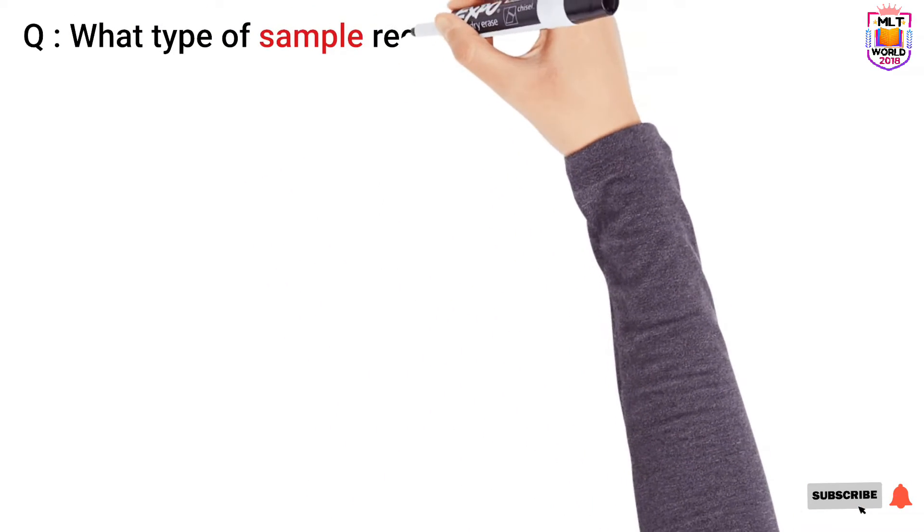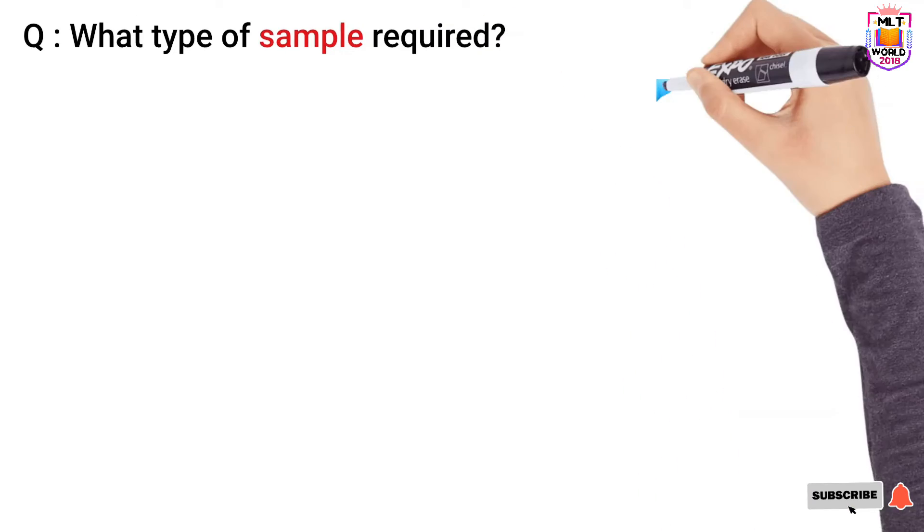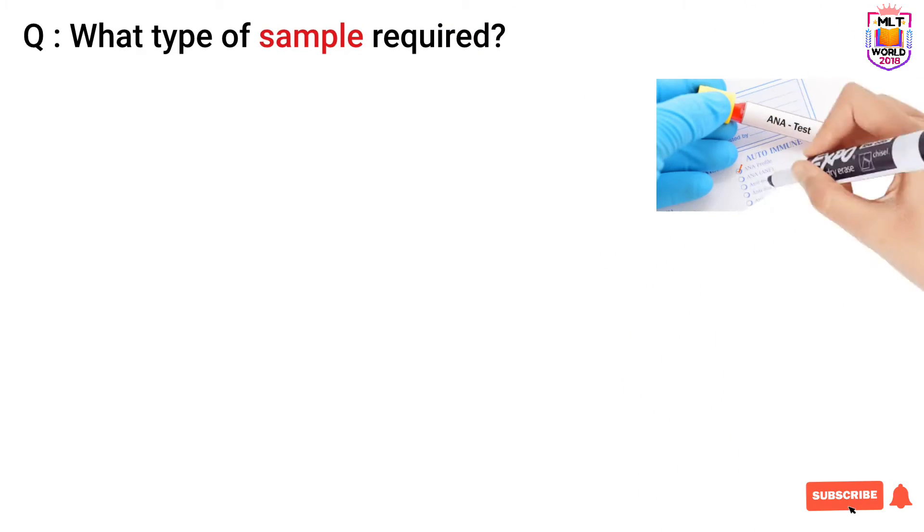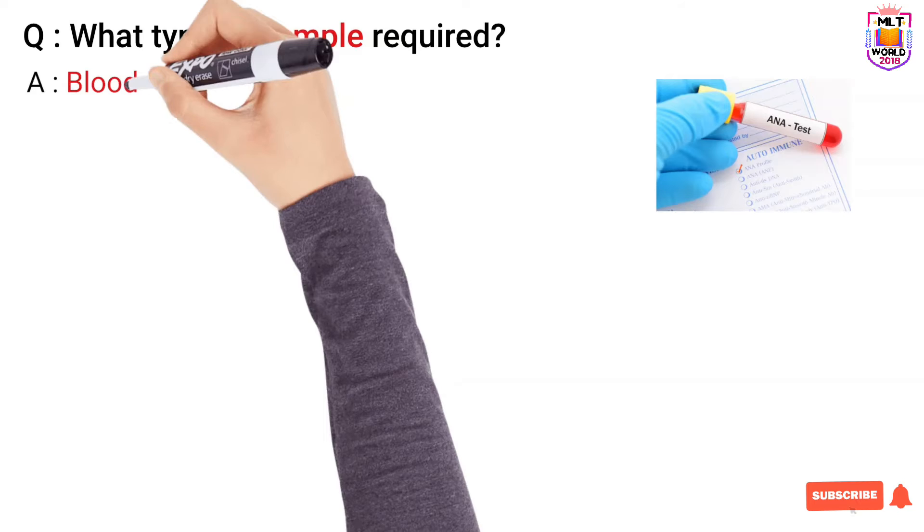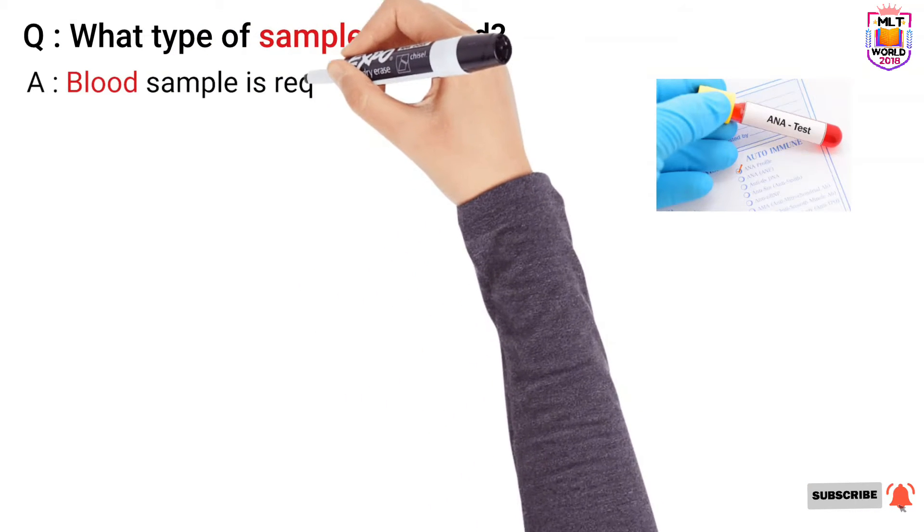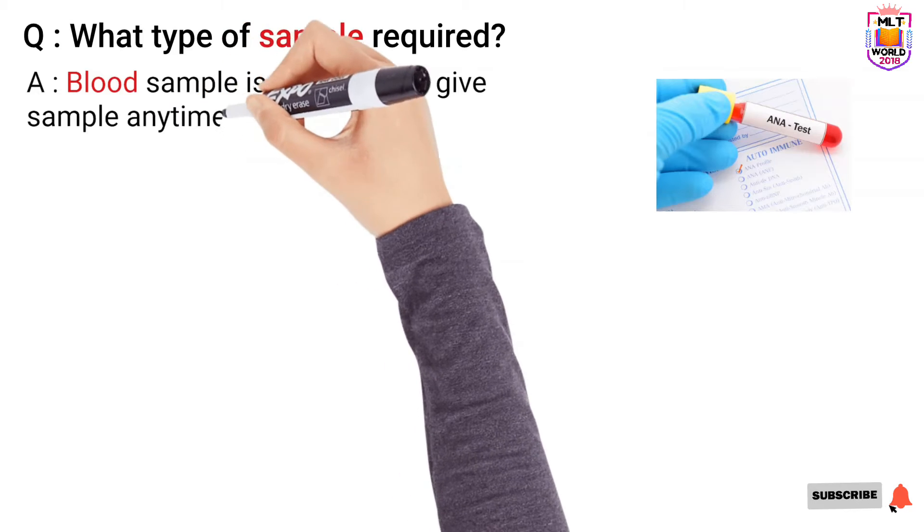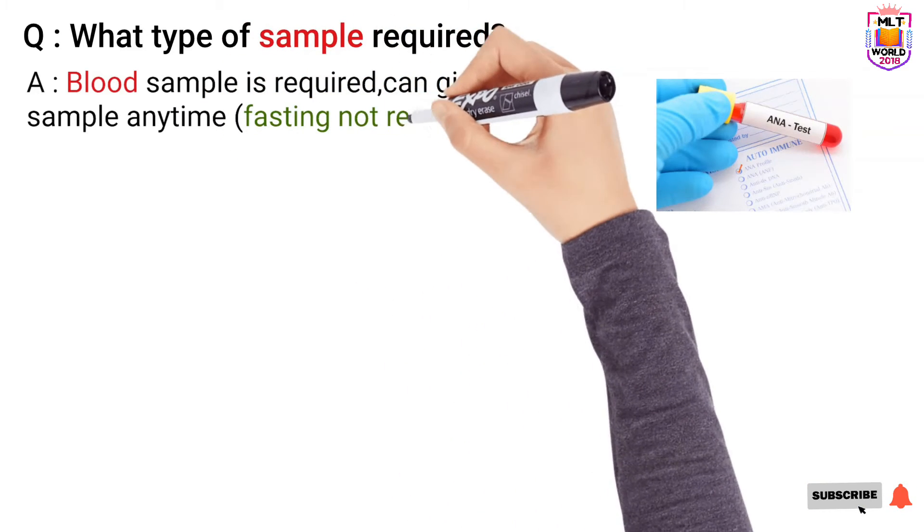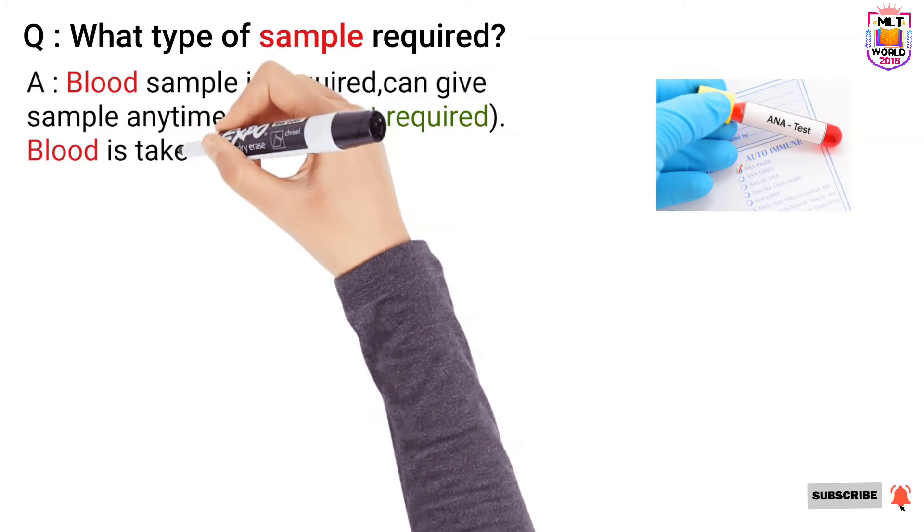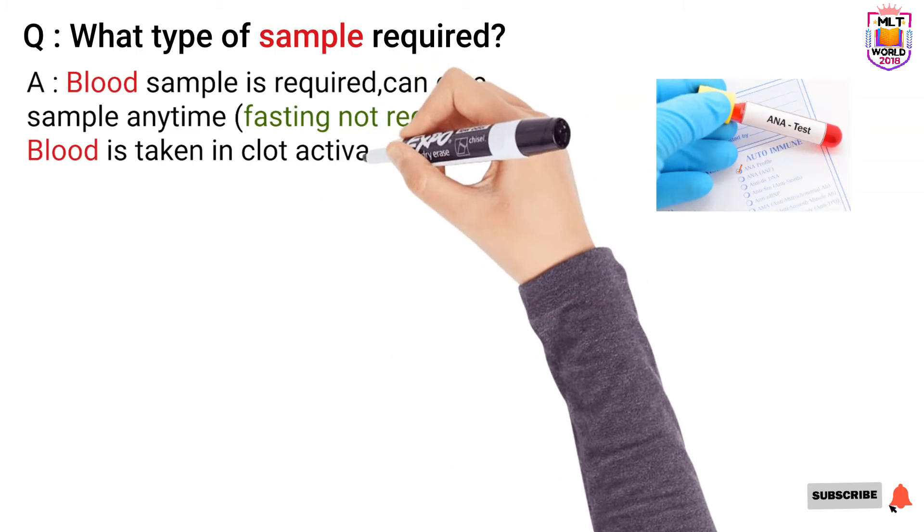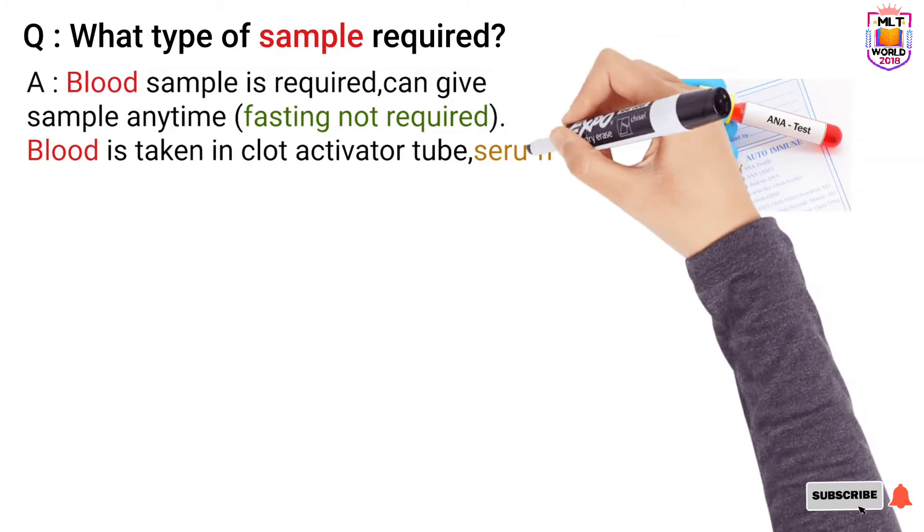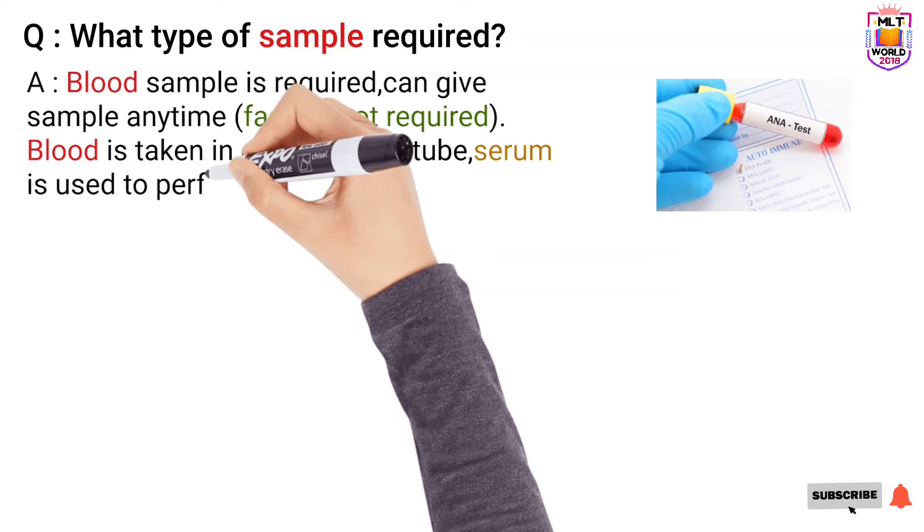So what type of sample is required to perform the ANA test? We need blood sample and for this sample no need fasting. Anytime sample can be collected and sample is collected in the clot activator tube, either red tube or gel tube. And then in lab we will centrifuge the sample and serum is separated and from serum we will perform this test.